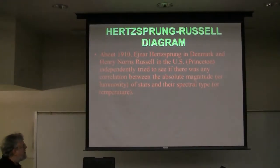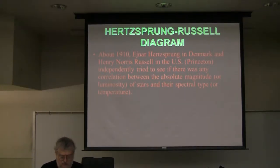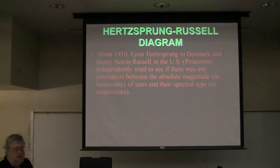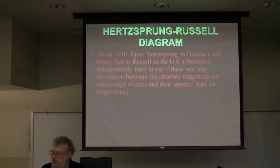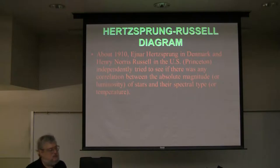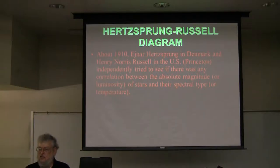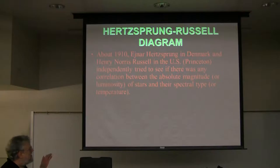Einar Hertzsprung in Denmark and Henry Norris Russell at Princeton, back in 1910 or thereabouts, tried to see if there was some kind of correlation between the absolute magnitudes or luminosities. The absolute magnitude is how bright a star would look if it were placed at a distance of 10 parsecs from our solar system. The luminosity is how luminous it truly is compared to the sun. They wanted to see if there's any relationship between that and the color or spectral type of a star.